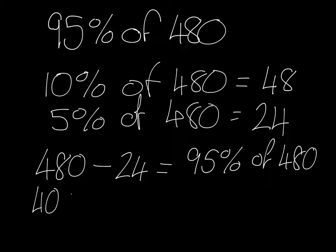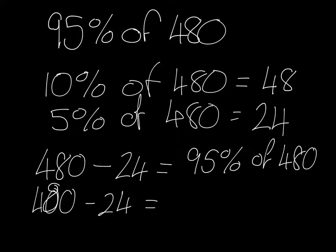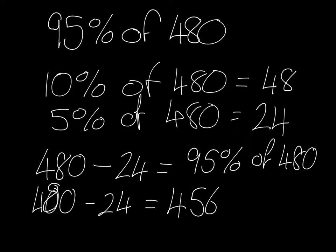So 480 take away 24 — if I do 480 take away 20, I've got 460, then count down the other 4, I've got 456. So I've done it by finding 10%, halving it to find 5%, and taking that away from the 480 I had there.